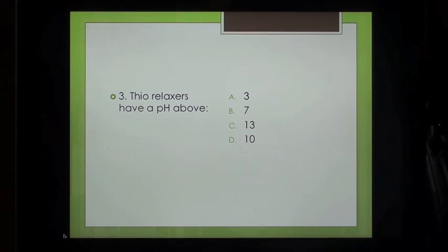Question 3: Thio relaxers have a pH above: A. 3, B. 7, C. 13, D. 10.